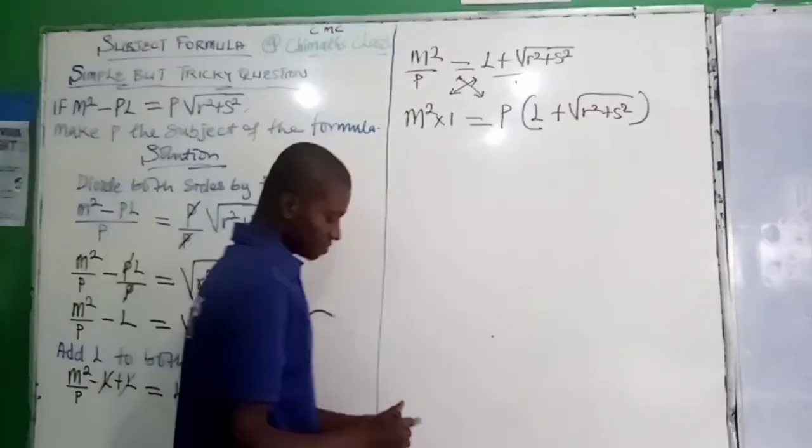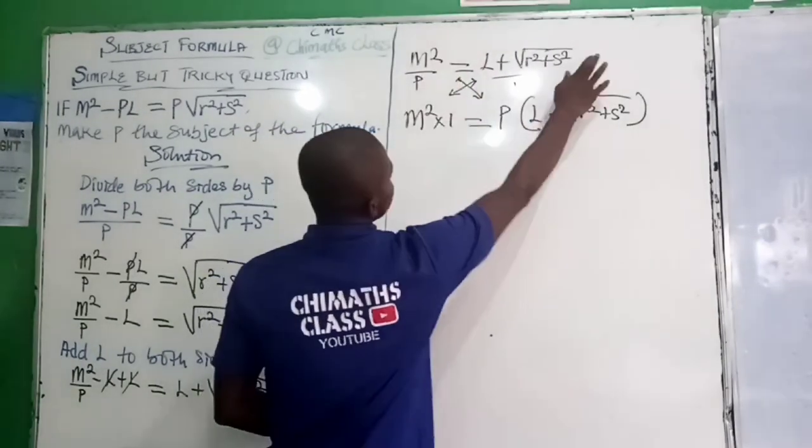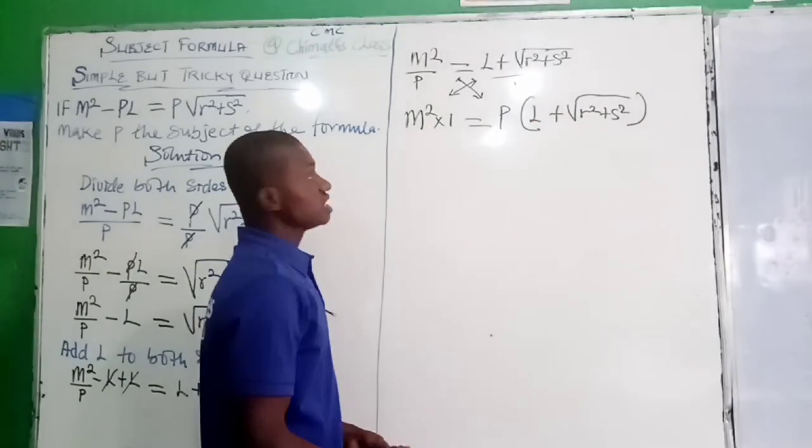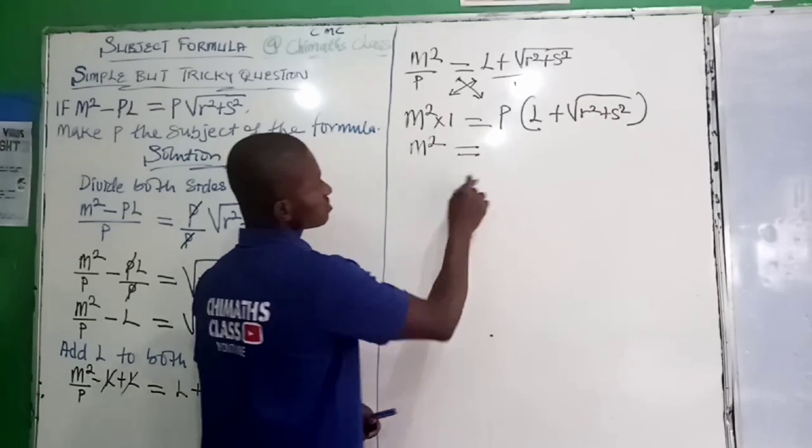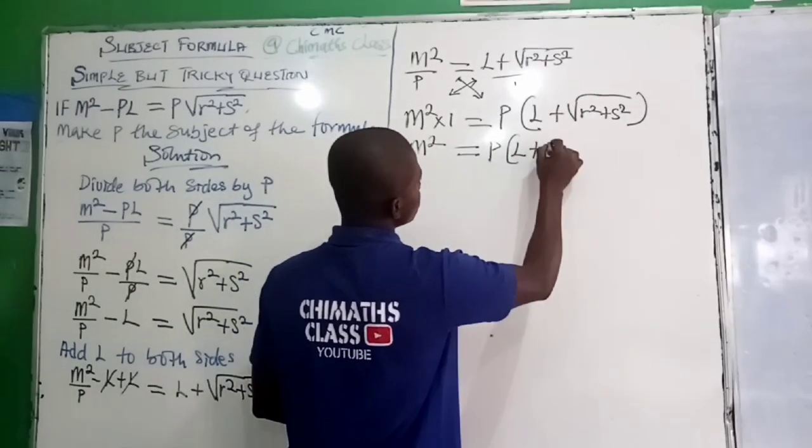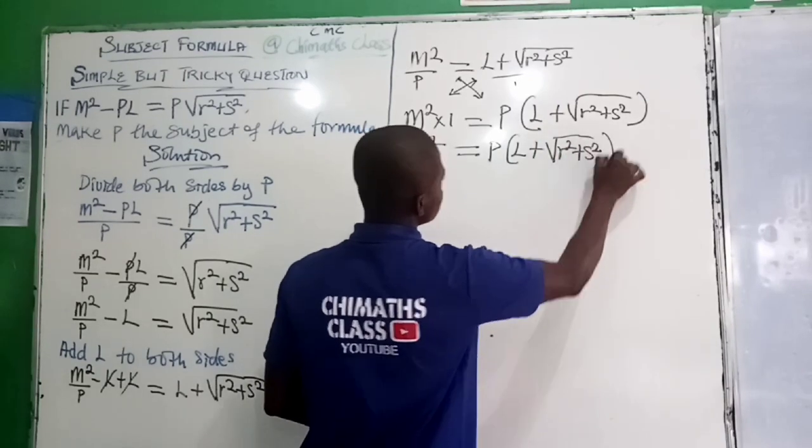When you cross-multiply, this P will multiply all the terms in the numerator. So M squared times 1, you have M squared. L plus the root of R squared plus S squared.